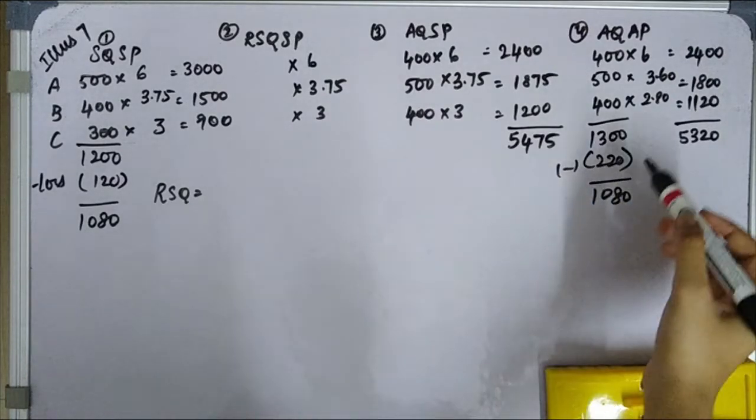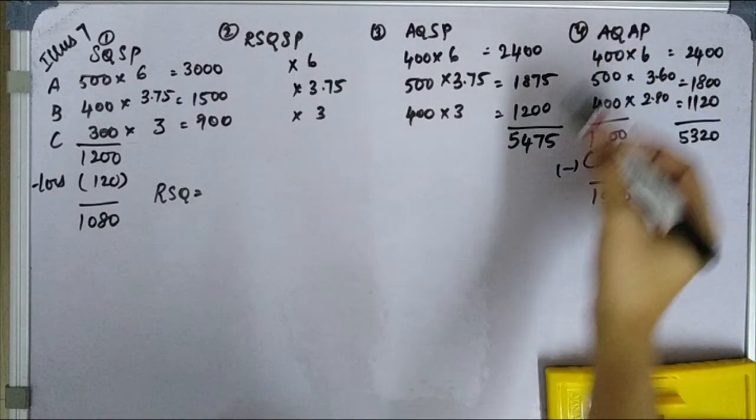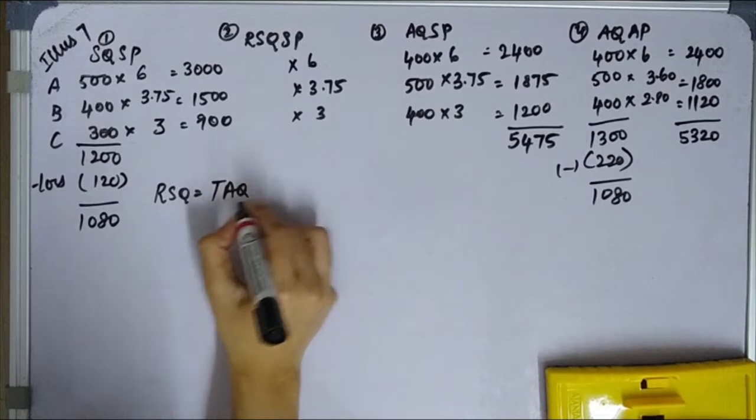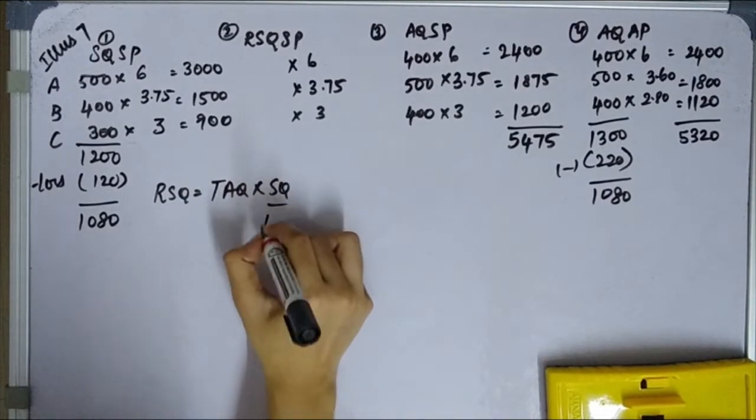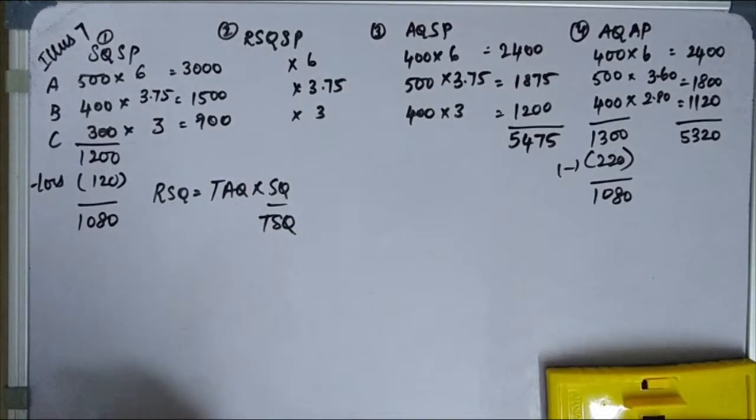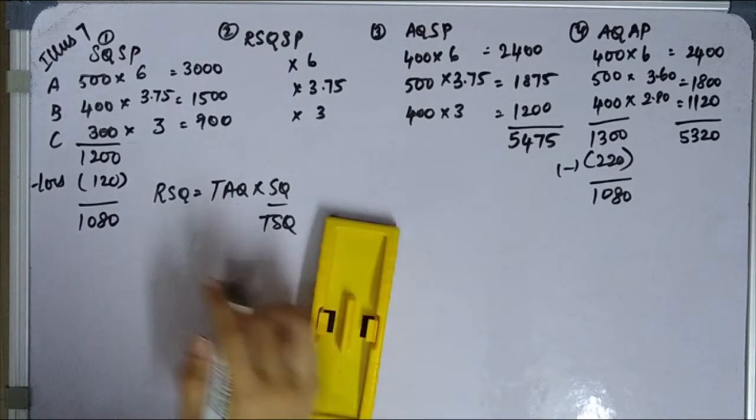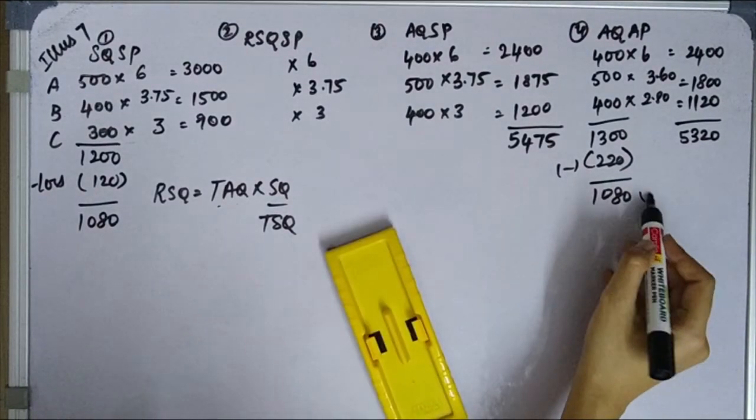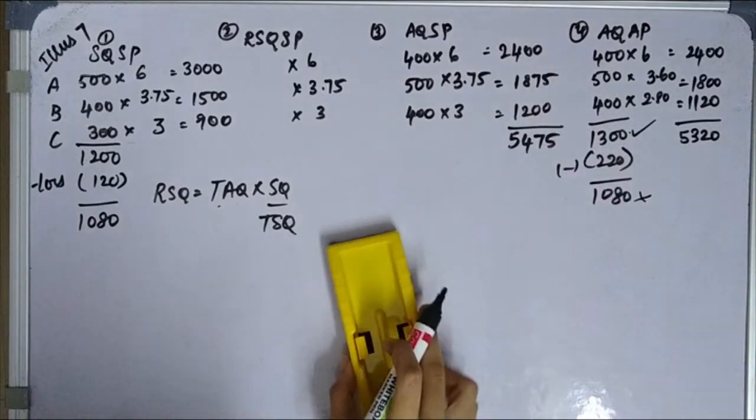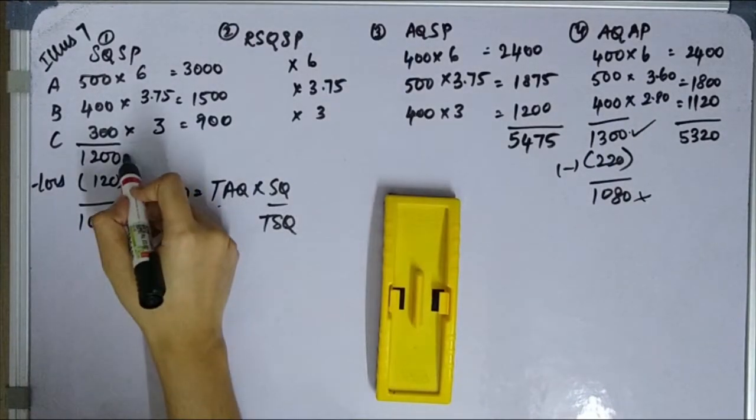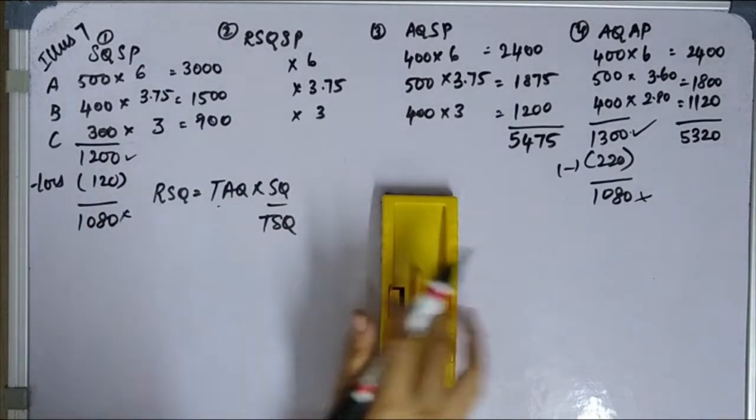Total actual quantity into standard quantity divided by total standard quantity. This is your formula for RSQ. Total actual quantity, we take the quantity before loss. Same thing here, we take before loss quantity.